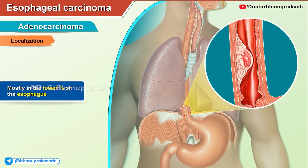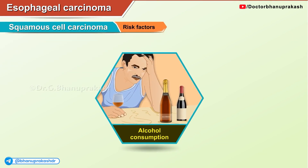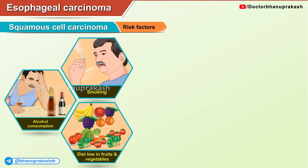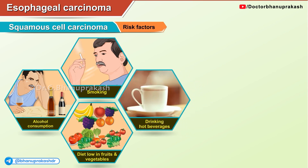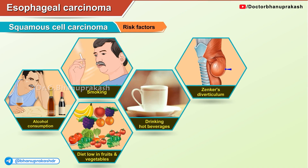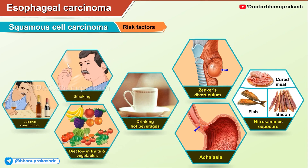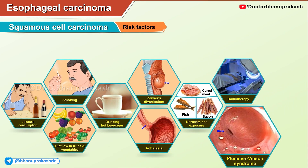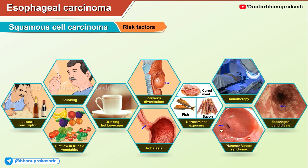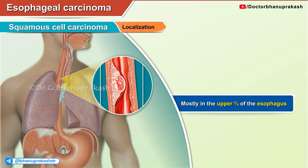Squamous cell carcinoma risk factors include alcohol consumption, smoking, diet low in fruits and vegetables, drinking hot beverages, diverticula (e.g., Zenker's diverticulum), achalasia, nitrosamine exposure (e.g., cured meat, fish, bacon), radiotherapy, Plummer-Vinson syndrome, and esophageal candidiasis. Its localization is mostly in the upper two-thirds of the esophagus.